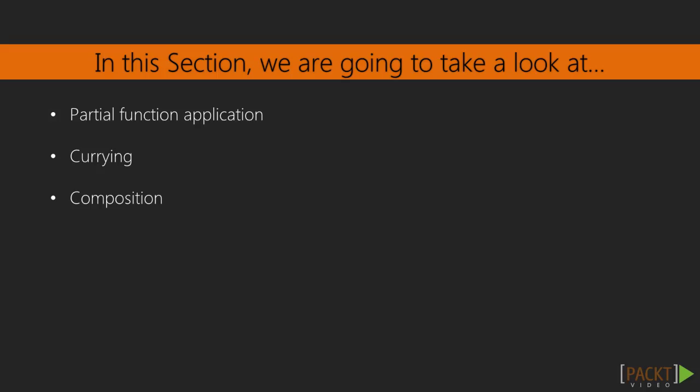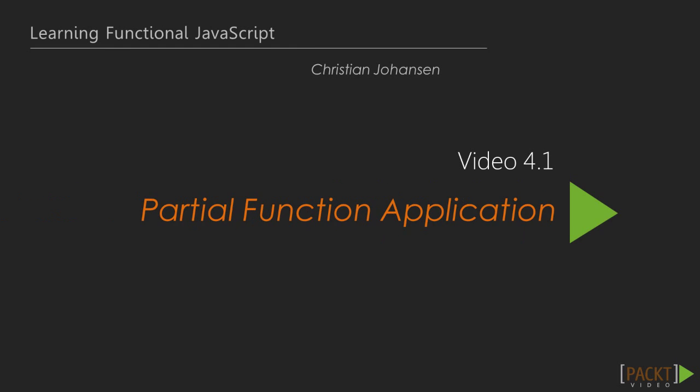In this section, we will follow up on what we learned in Section 2 and perform some neat tricks with functions. We'll partially apply them, curry them, and finally compose them to create powerful abstractions from small generic functions. This is video 4.1, Partial Function Application.